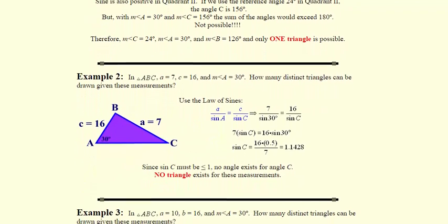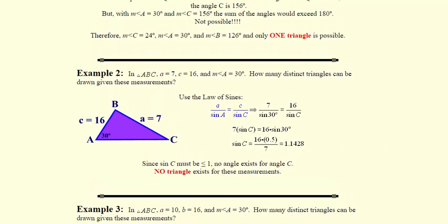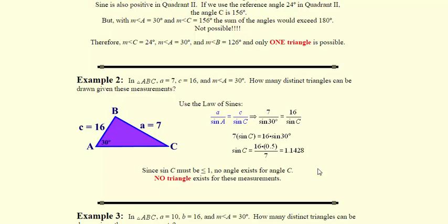In example number two, what we're going to do is the same exact thing. We take what we're given. We use law of sines to solve it. In this case, when we go to solve it, when we go to find angle C, so we take the inverse of 1.1428, it tells us on our calculator that's not possible because this value cannot be bigger than one. So if you try and do it, you're solving using law of sines, and you use your inverse sign to find that angle, and it doesn't work, then you know that just doesn't work. That's not possible for it to work at all.